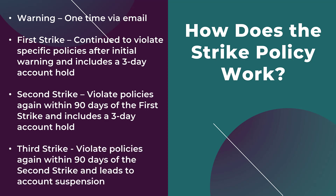The third strike will occur if you continue to violate the policies within 90 days of the second strike. Since you had one warning and two previous strikes, a third strike will lead to an account suspension. If your account is suspended, any other accounts related to the suspended account will also be suspended. You can appeal a suspended account, but it's pretty hard to get it re-enabled unless mistakes were reported. You can still access historical information from a suspended account, but you will no longer be able to create anything new.